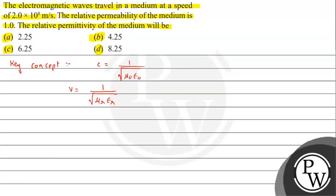Now, to be precise, it is in a medium. So we also need to understand that μ_M is nothing but μ_R into μ₀. Similarly, the permittivity of medium is permittivity of free space ε₀ into relative permittivity ε_R. We need to know these basic relations. So we are interested in calculating the relative permittivity of the medium, which means we need to find ε_R.